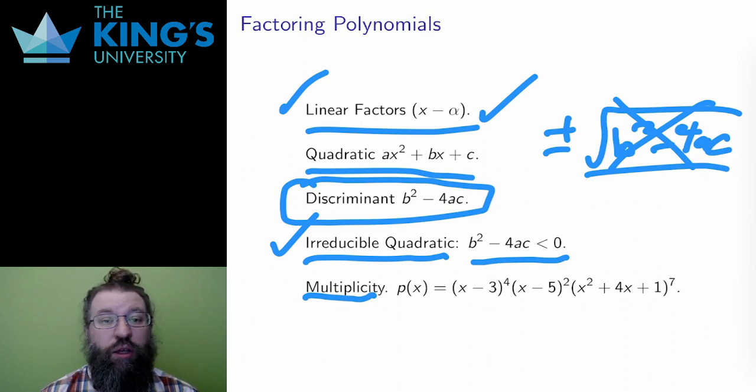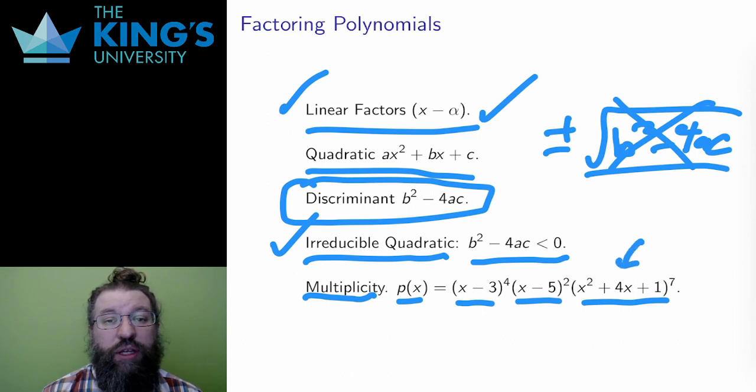The same factor can show up several times in a polynomial. Consider this polynomial p, which factors into x minus 3 to the 4, x minus 5 squared, and x squared plus 4x plus 1 to the 7th. Note that this last piece is an irreducible quadratic. There are three factors here, but they have exponents.